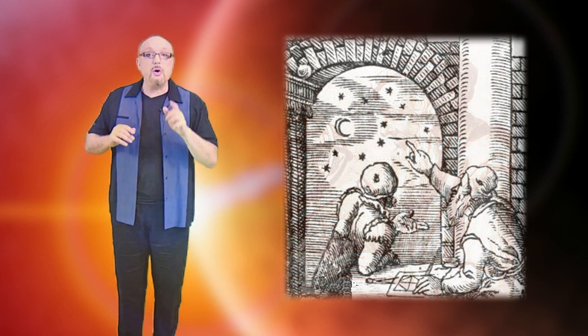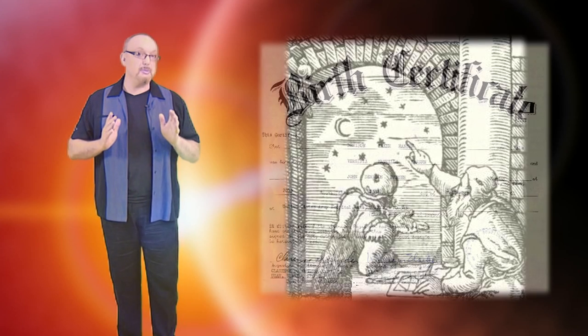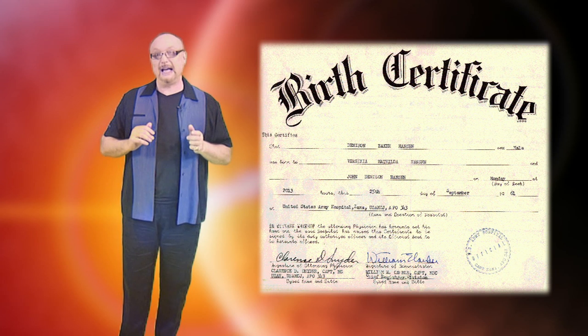So when this chart is drawn up, it's drawn up for the moment of your birth, the second, as accurate as you can get it. It's on your birth certificate, and birth certificates since 1939 have had, at least in the United States, the time on them.